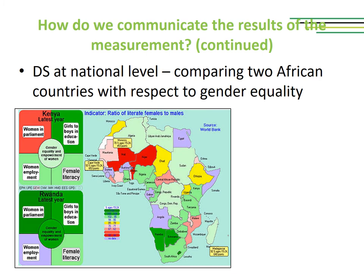On this slide there is another application of the dashboard of sustainability, this time at the national level, comparing two African countries with respect to gender equality — Kenya and Rwanda. By simply looking at the colors we can see that with regard to women in parliament, Rwanda is doing a lot better than Kenya. The colors are of great help and allow readers to very quickly become familiar with various issues.